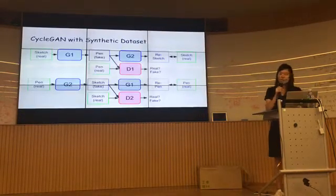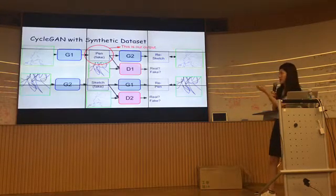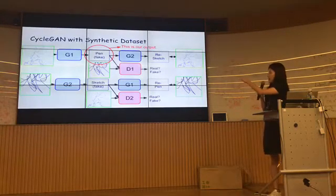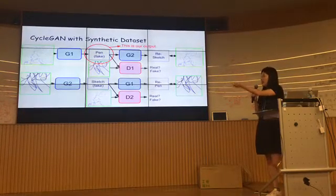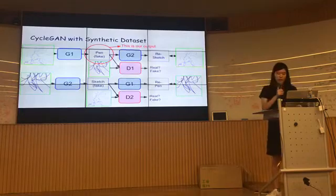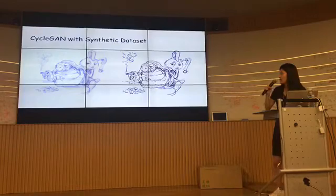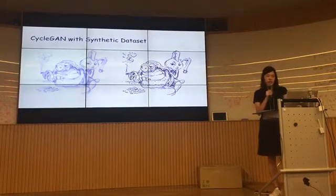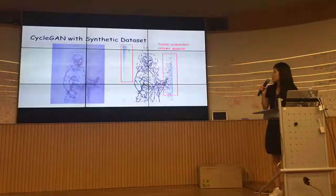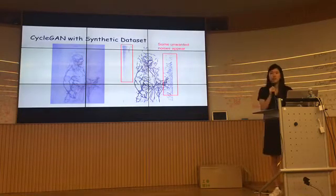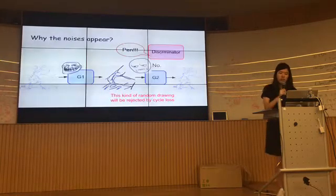Now, this is the CycleGAN module. We feed our sketch and pen data, and the generator converts the sketch image into the pen target domain — that's our output. But in the first result from the original CycleGAN, there are some unwanted noises appearing in the output.